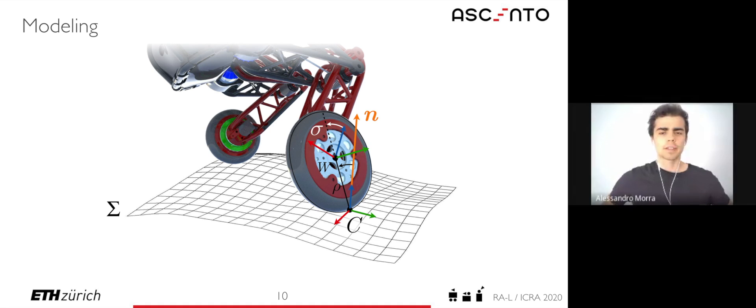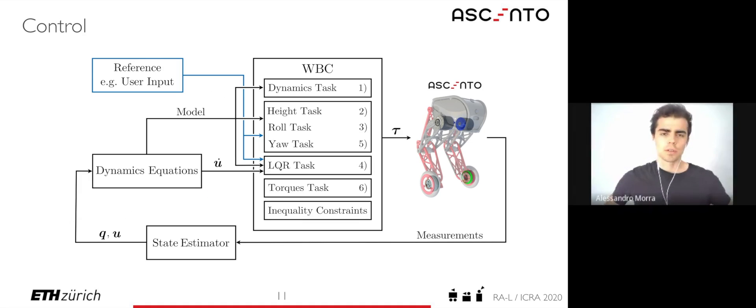But how is the dynamics then used to synthesize the controller? At the heart of our control strategy lies the whole body controller. It takes an estimated state, the model of the system, and high-level command and calculates the four motor torques directly. It is a hierarchical controller meaning we can specify different tasks and their order. The controller iterates through these tasks and solves each task as good as possible without hindering the previous ones. Additionally some inequality constraints can be specified respecting the motor saturations as well as the ground contact and no slipping.